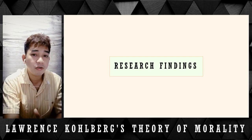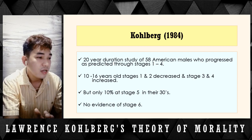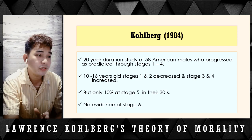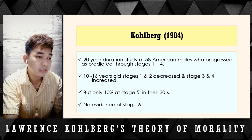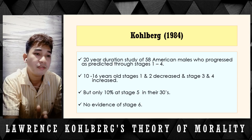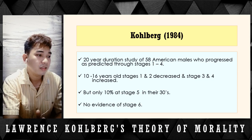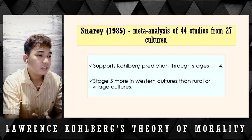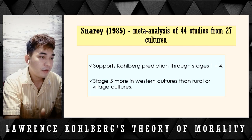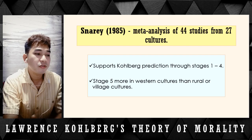Now for research findings using Kohlberg's theory of moral development. First, Kohlberg in 1984: his 20-year duration study of 58 American males who progressed as predicted through stages 1 to 4. Among participants aged 10 to 16, stages 1 and 2 decreased while stages 3 and 4 increased. But only 10% reached stage 5 in their 30s, and there was no evidence of stage 6 — which is why he said very few people reach Level 3.